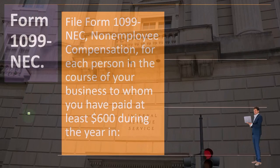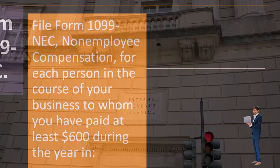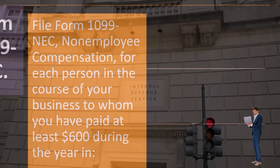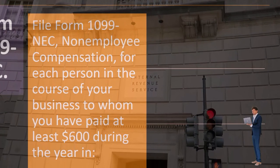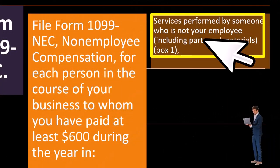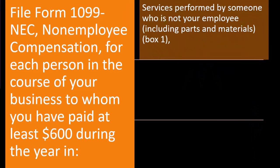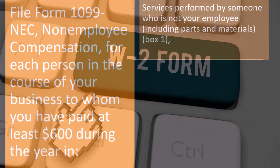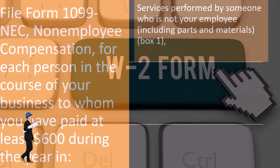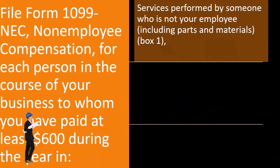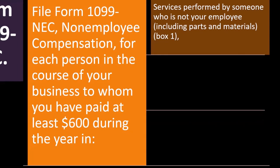File form 1099-NEC, non-employee compensation, for each person in the course of your business to whom you have paid at least $600 during the year for services performed by someone who is not your employee, including parts and materials. Note that if they are your employee, you report on them using the W-2 form, and you are also required to withhold from them — which opens up the question of whether to hire someone as an employee or a contractor.